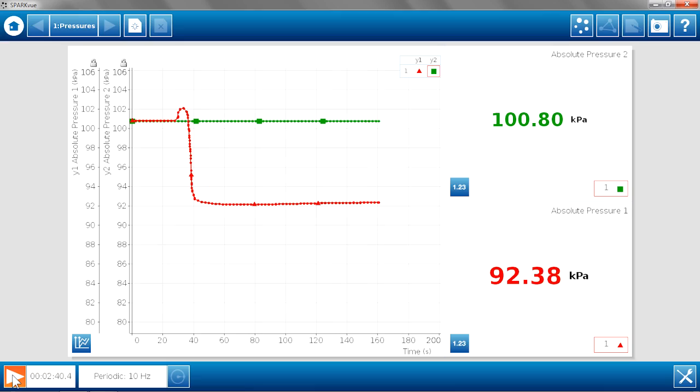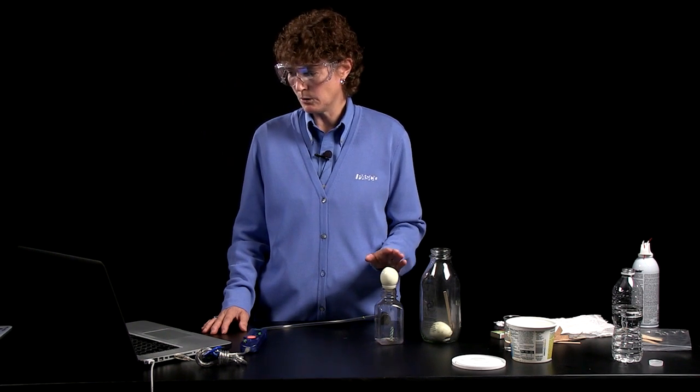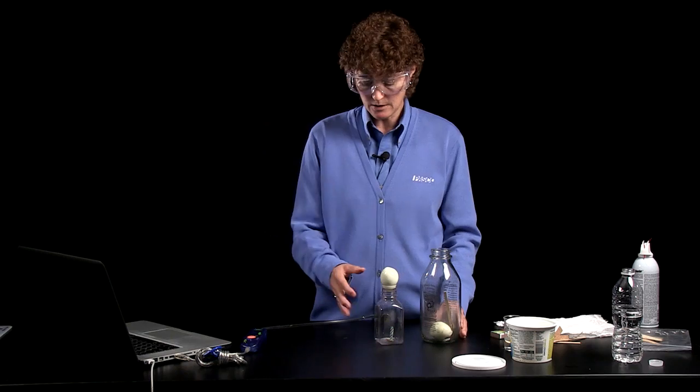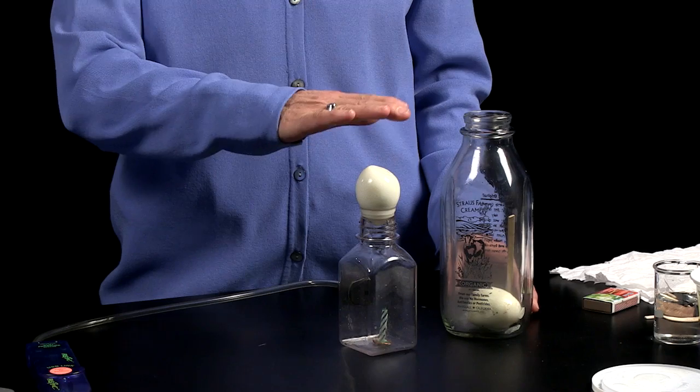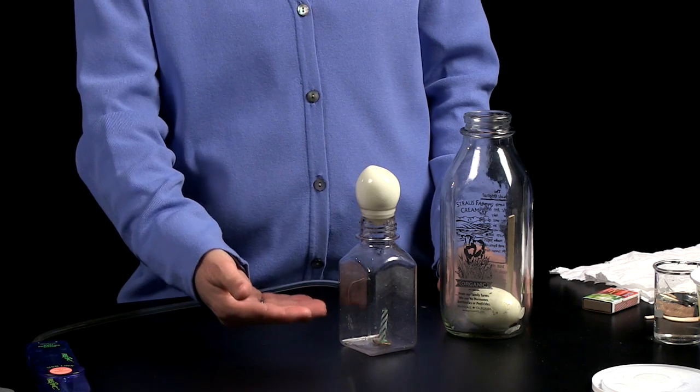What we can see from our pressure graphs is that the pressure inside the bottle has dropped to a value and it's holding steady there. It's not continuing to decrease. So I doubt that this egg will make it all the way into the bottle, but we can at least get a look at the difference between the pressure and therefore the force on the egg.